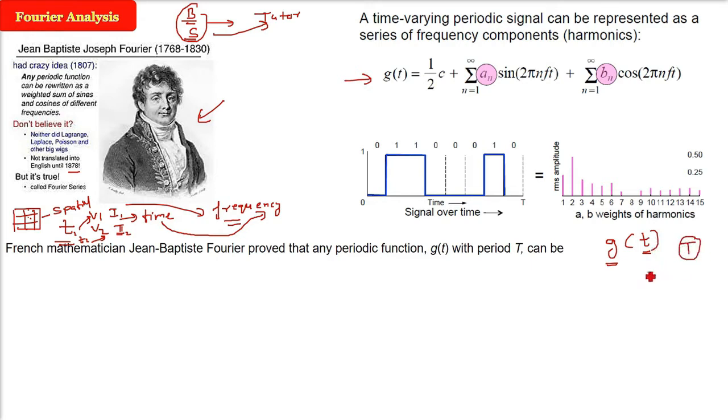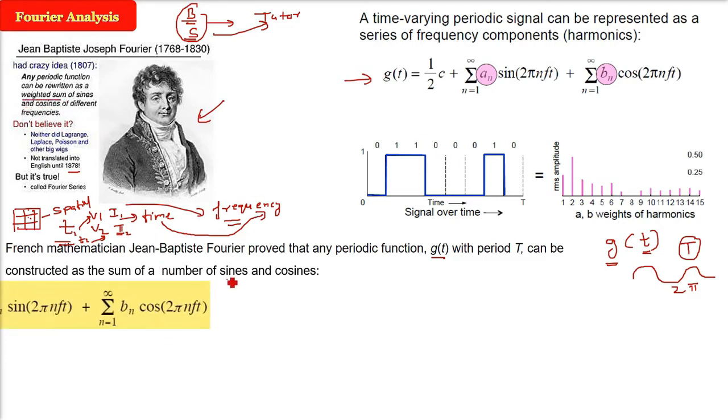So for example, sine function or a cosine function, it will always repeat itself after 2π, 360 degrees. So sine and cos are periodic functions. So he said any function which is periodic, this can be constructed, this can be written as the sum of number of sines and cosines. He also said it has to be weighted. Finally, this expression has come. This is the expression he said.